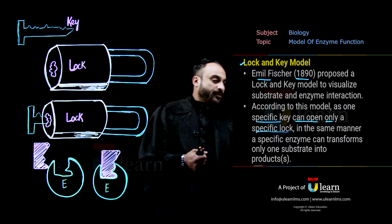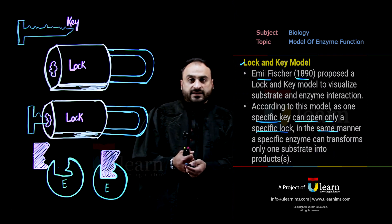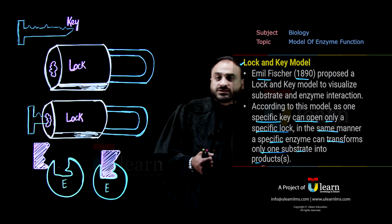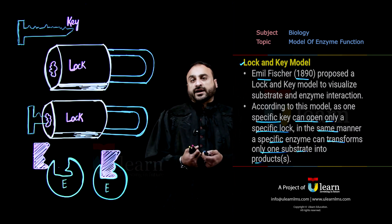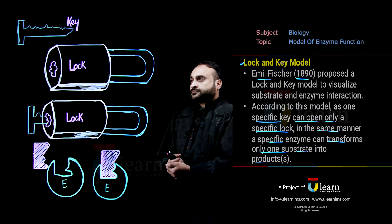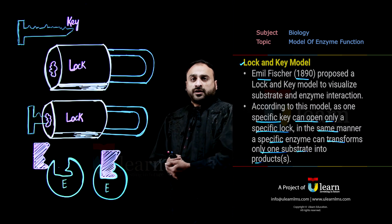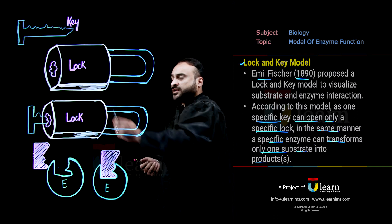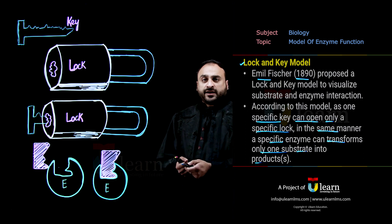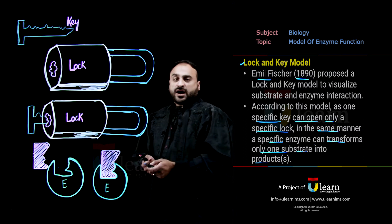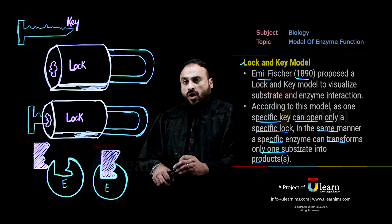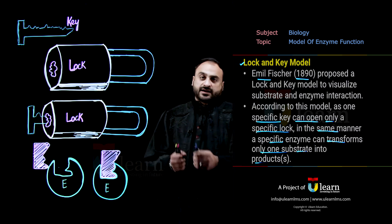In the same manner, एक specific enzyme transform कर सकता है एक मखसूस substrate को product के अंदर. इस diagram को देखें तो यहाँ पर एक lock है और इस lock के पास एक specific region है जहाँ पर एक मखसूस key insert होती है और वो key insert होने के बाद इस lock को open कर सकती है. कोई और key इस lock को open नहीं कर सकती.